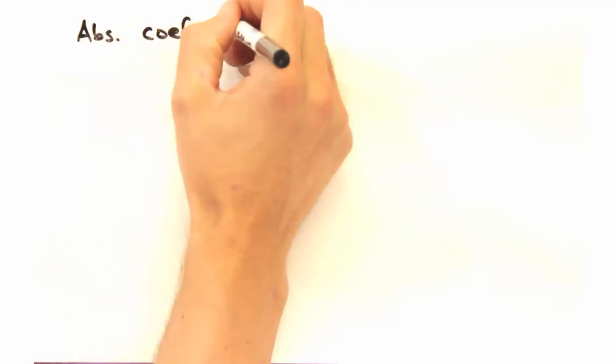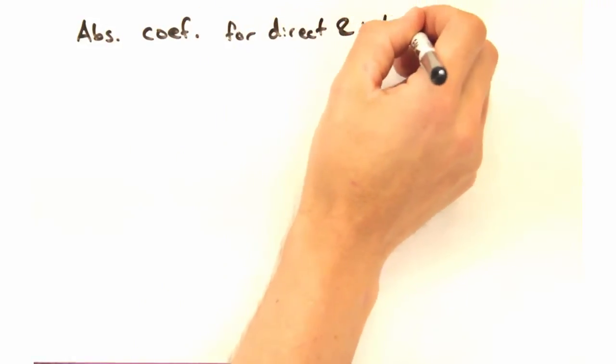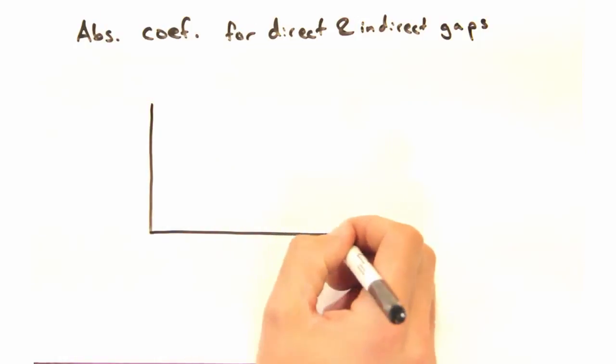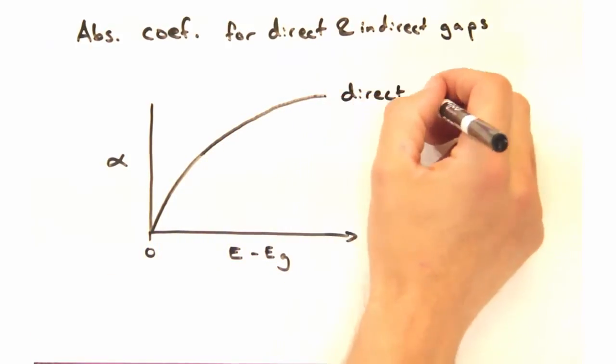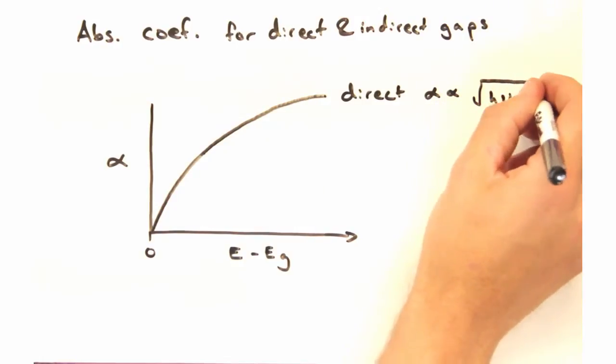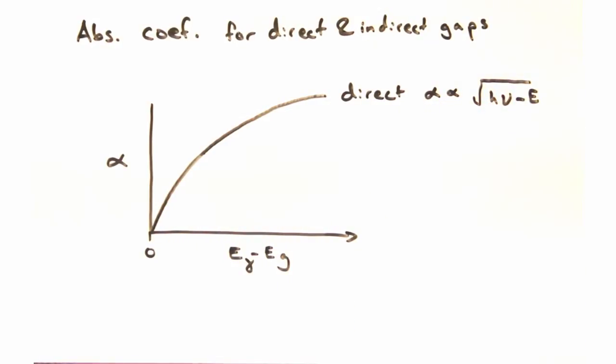Let's start with a plot of the absorption coefficient versus energy for a direct band gap material. Where this sharp edge is where the band gap begins, because any photon with an energy below this won't be able to excite electrons from the valence band edge into the conduction band. Yeah, and another question for you. Why do you think the absorption coefficient is low, right at the band, but it gets higher as you increase the energy? Let me say it differently. How many modes are available for an electron at the conduction band edge? Only a few. So then as energy increases, more of the above states are available for the electrons to jump into. And more of the electrons in the valence band are able to jump up into the conduction band. Exactly.